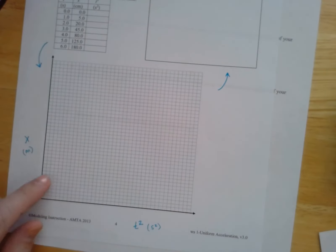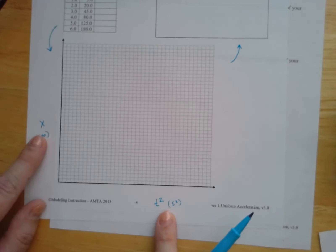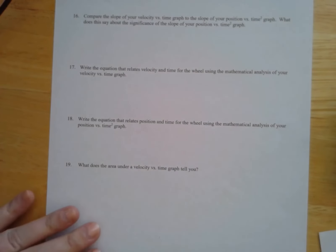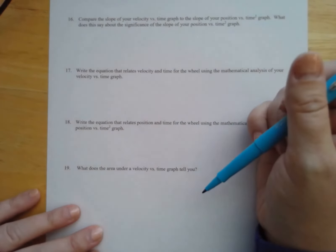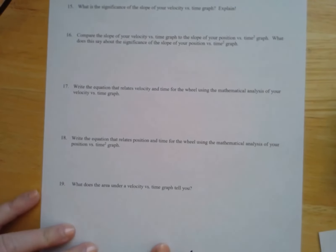With position versus time, we can do some different analysis to do average velocity versus time. A different analysis will give us position versus time squared. And then what we're going to do when we get to the very end is we're going to start comparing these things to each other and see what it is that we can learn from that data.